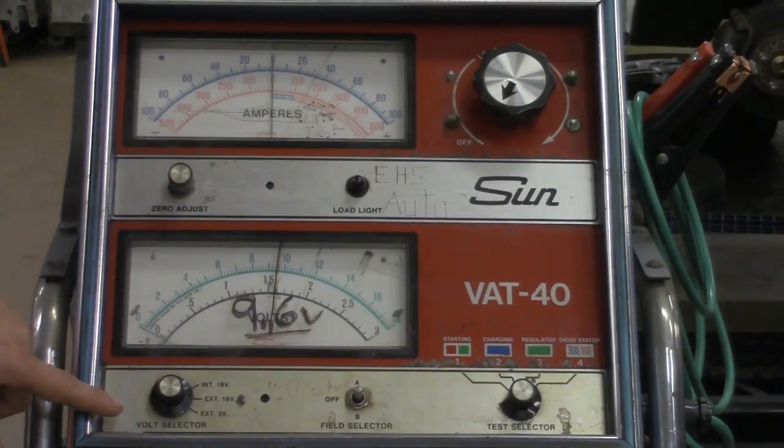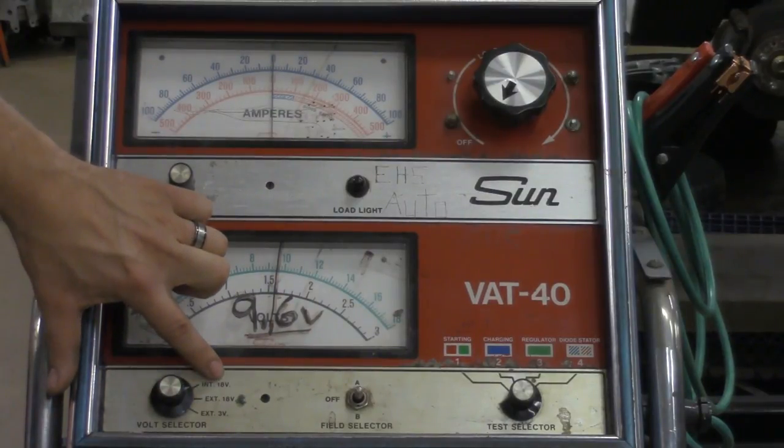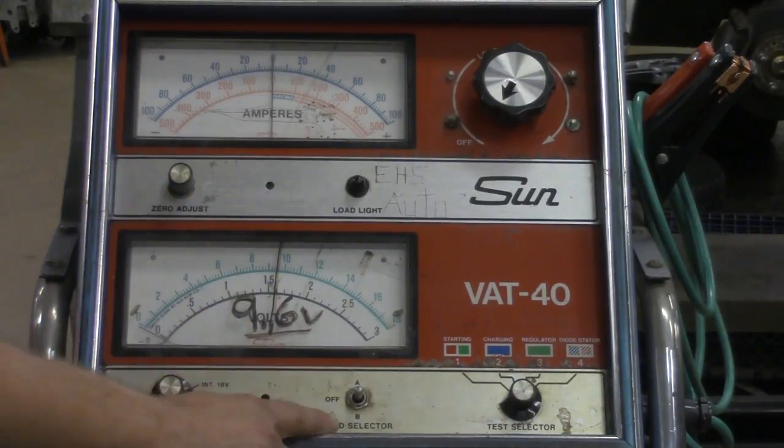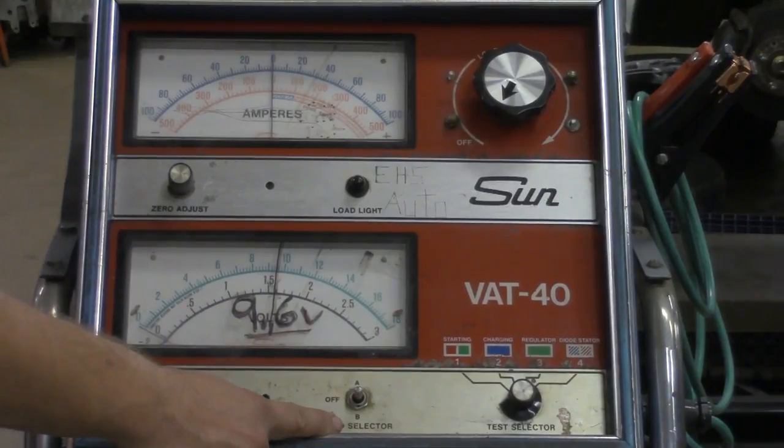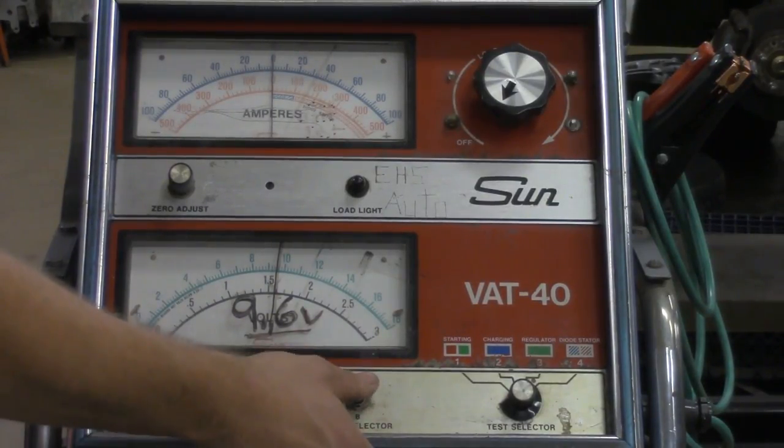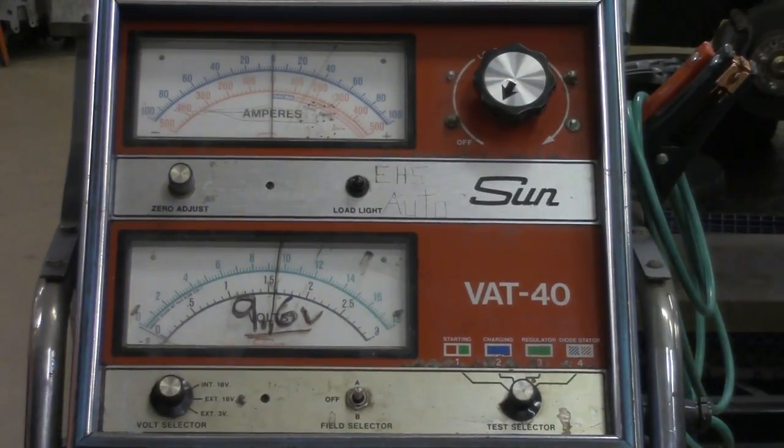Next I'm going to come down here. This is my volt selector, and I want to make sure this knob is turned and pointed to internal 18 volts. That's INT 18V. My field selector switch right here has to do with my alternator testing system, so this is not a big deal. It's a momentary switch in both the A and B positions, so normally it's going to be in the off position. Just leave that field selector alone.